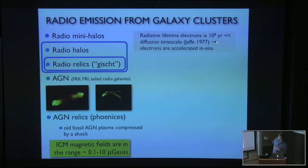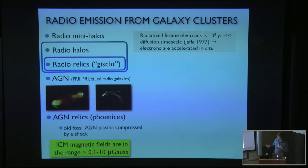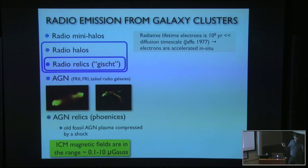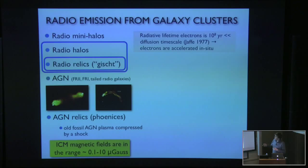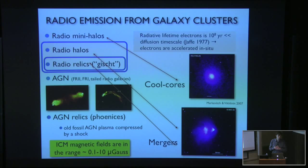Somehow these electrons must be really accelerated in situ in the medium itself. You cannot start from the hotspot where particles are accelerated, diffuse them outwards, and fill the entire volume of a cluster with radio emission, because you simply don't have enough time - all these electrons have already lost their energy and you cannot see them in the radio. You need some other mechanism to accelerate these particles. I will mainly talk about these really large diffuse structures, which are found in merging clusters. There are also mini halos found in cool core clusters. This is a famous example of a merging cluster - the bullet cluster. These halos and relics are exclusively found in merging clusters.